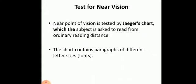For near vision testing, the near point of vision is tested by the Jaeger's chart. The subject is asked to read printed matter from ordinary reading distance. The chart contains paragraphs of different letter sizes or letters of different fonts. You will be doing all this in the practical lab.